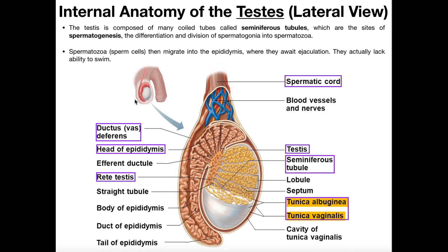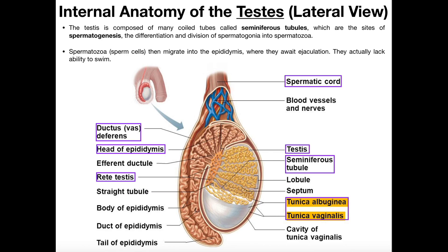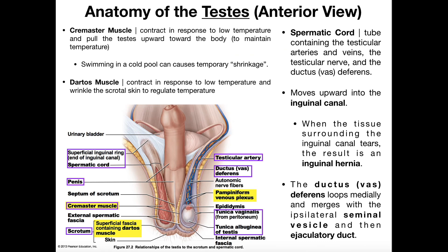We're going to conclude this video here. We've covered a lot of relevant anatomy, and we'll cover more in the next video. We'll see a continuation of the path that sperm cells take on their way out during ejaculation — a great way to learn this because it helps with both physiology and anatomy by learning it in sequence. Hopefully you liked this video; please make sure to like and subscribe, and I will see you in the next video.